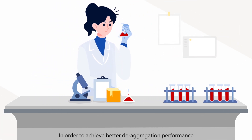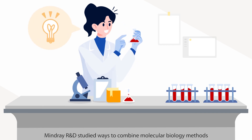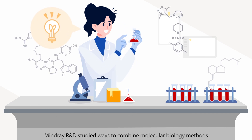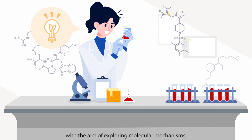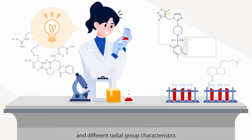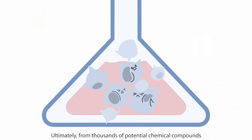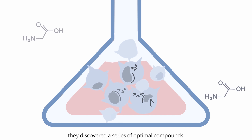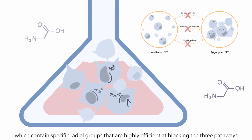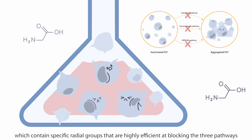In order to achieve better de-aggregation performance, MindRay R&D studied ways to combine molecular biology methods, exploring molecular mechanisms and different radical group characteristics. Ultimately, from thousands of potential chemical compounds, they discovered a series of optimal compounds which contain specific radical groups that are highly efficient at blocking the three pathways.